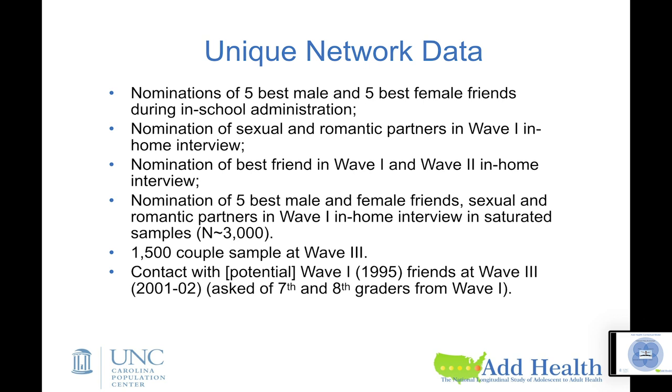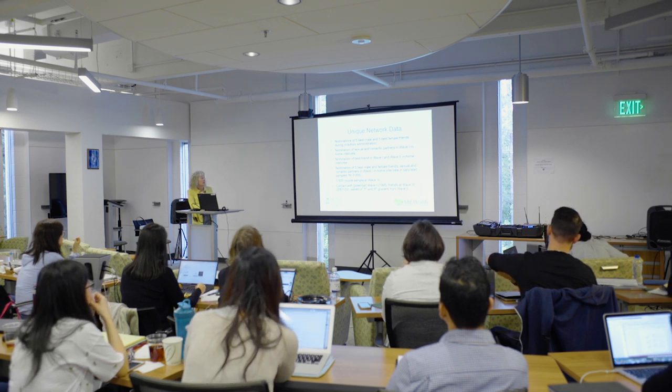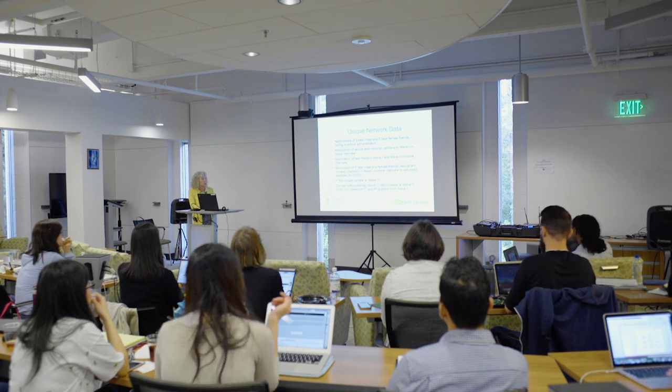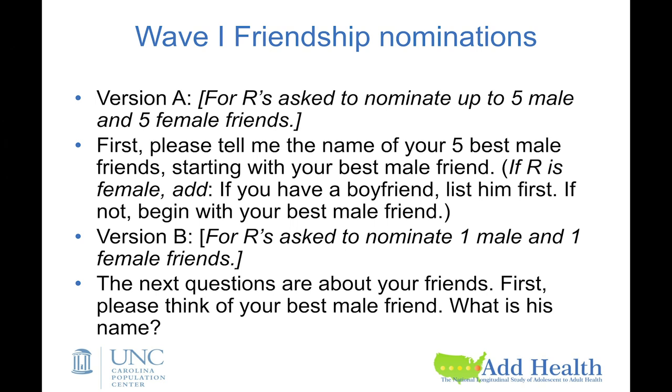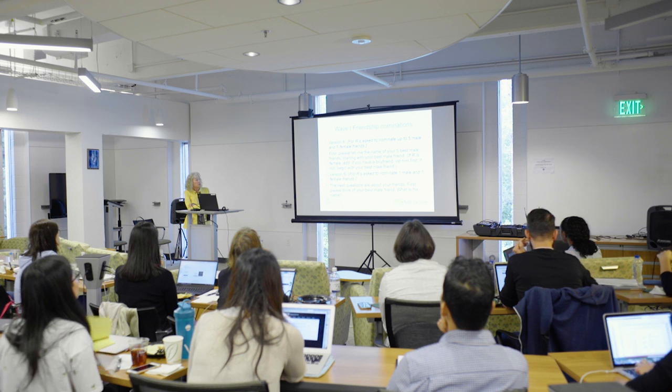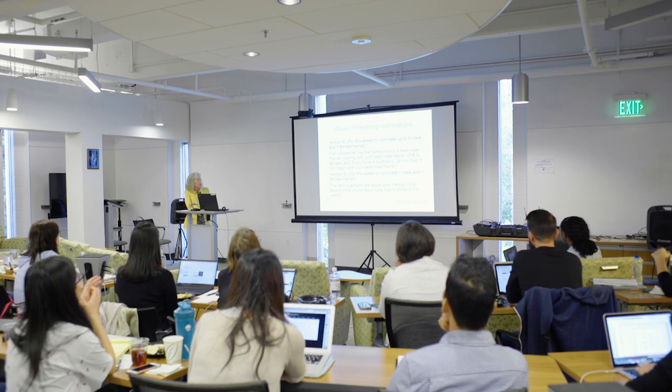The network data includes the five best male and female friend nominations, romantic partners, a best-friend nomination in both wave one and wave two in-home interviews, and the saturated samples. At wave three we also got a couples sample, and asked about continuing contact with friends nominated back in the in-school questionnaire.